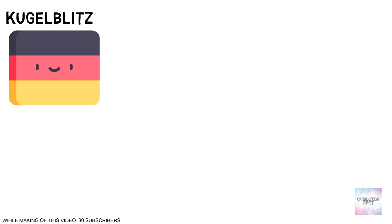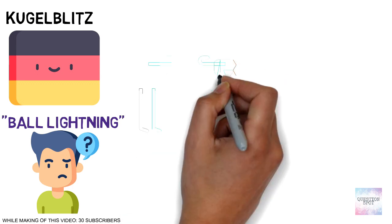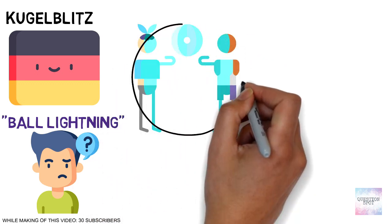Kugelblitz has a German meaning of ball lightning, though it shouldn't be confused with the phenomena of ball lightning, that is lightning that is in the shape of a ball, as seen on earth.